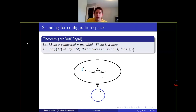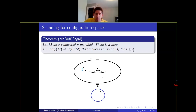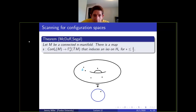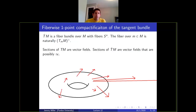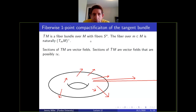This picture will make sense when I actually define the scanning map — it's one of those situations where you have a microscope and you move it around your manifold and record what you see. The bundle TM-dot is a fiber bundle over M with fibers S^n. The fiber over m is naturally the tangent space, a copy of R^n, and then we one-point compactify each fiber.